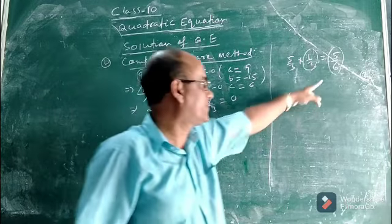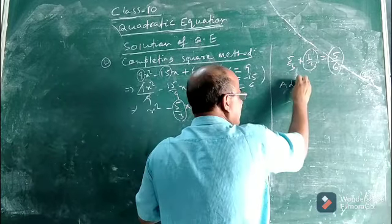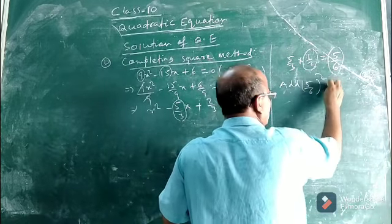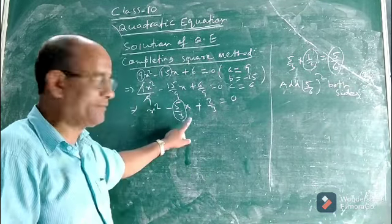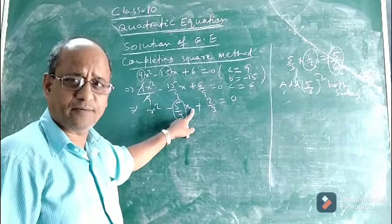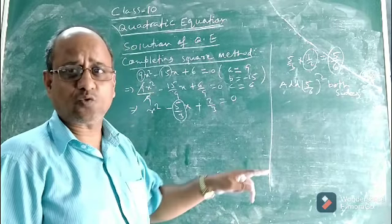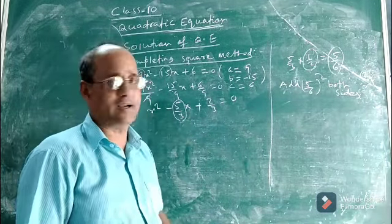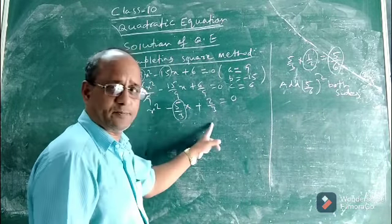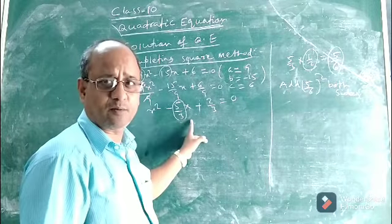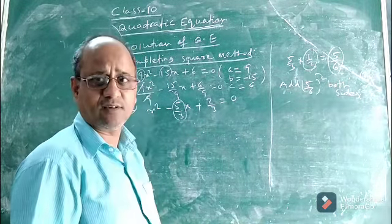Now take this product, which is 5/6, square it to get (5/6)², and add it to both sides. So the rule is: after step one, whatever the coefficient of x is, multiply it by 1/2, take the square of that product, and add it to both the left-hand side and right-hand side. Add (5/6)² to both sides, and then the left-hand side will be expressed as a perfect square.